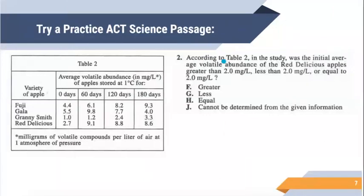Now we're going to try a question related to table two — try number two. Number two asks about the red delicious apples, so I'm focused on the bottom row. They're asking about the initial value, which means at zero days, and whether it is greater than, less than, or equal to two. At zero days, red delicious is 2.7. Since 2.7 is greater than two, number two should be F.